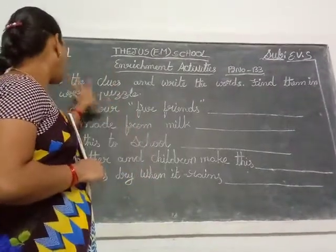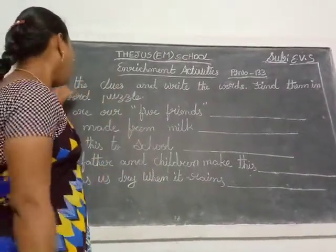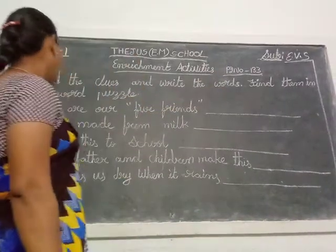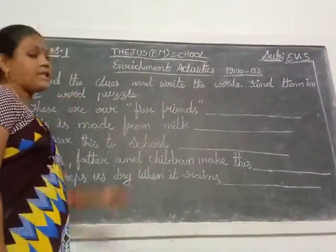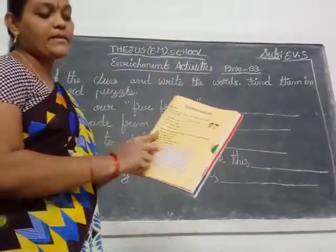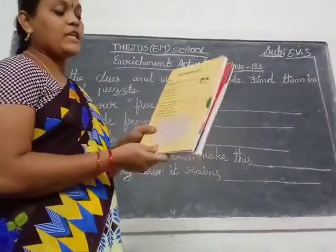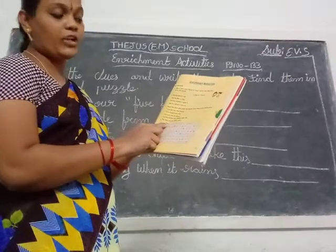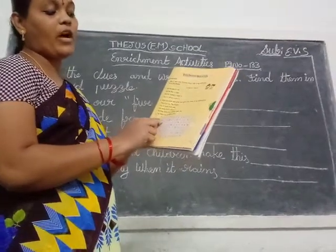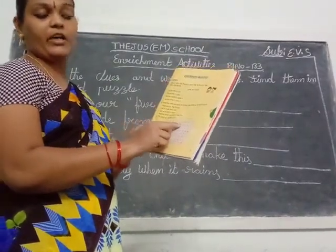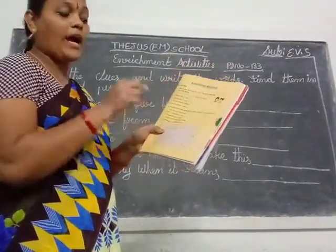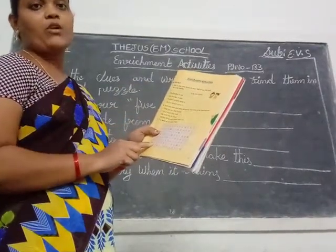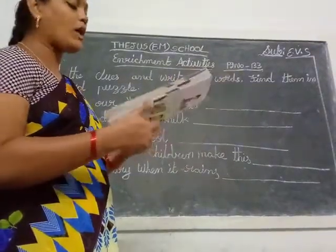Okay children, in your textbook one word puzzle is there. You read the sentences, find out the clues — what is that word — and complete the blank. You identify the word puzzle also. What is the first one?